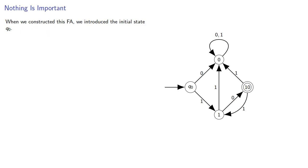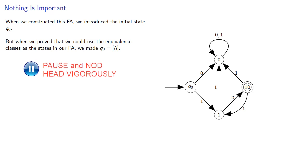So to resolve this, note that when we constructed this finite automaton, we introduced the initial state q0. But when we proved we could use the equivalence classes as the states in our finite automaton, we made the initial state the equivalence class of the empty string. And so the question is, where is the empty string?